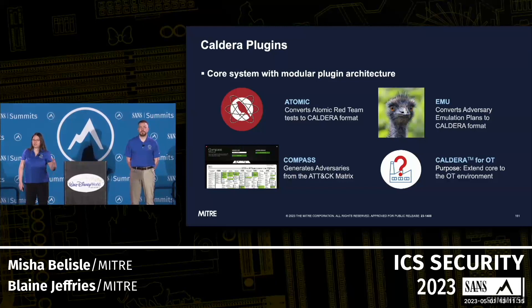Caldera has a core system with a modular plugin architecture. Some examples of these plugins include Atomic, Compass, and EMU — there are dozens of others, including one for training and one called Stockpile. Together these provide a lot of powerful capabilities built from different open source and other tools.